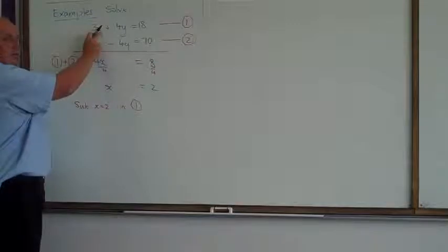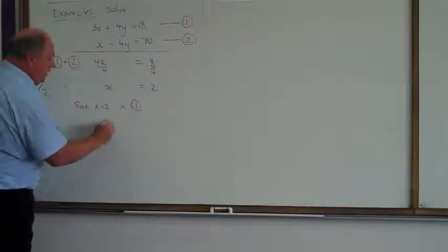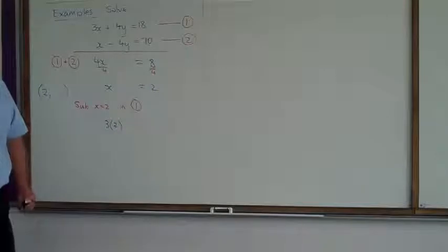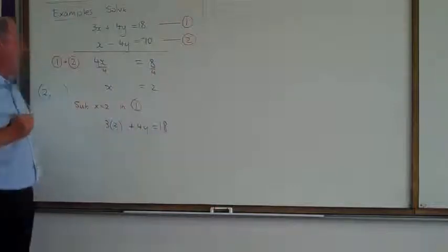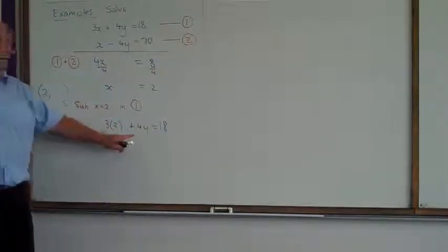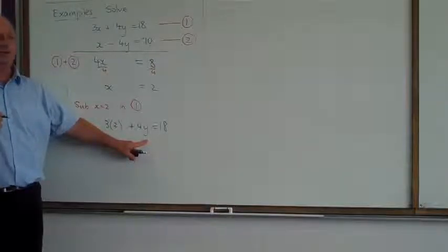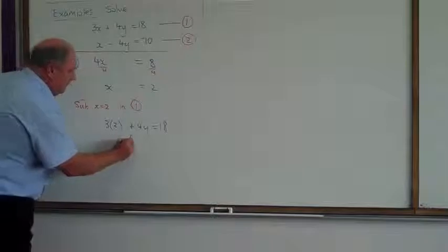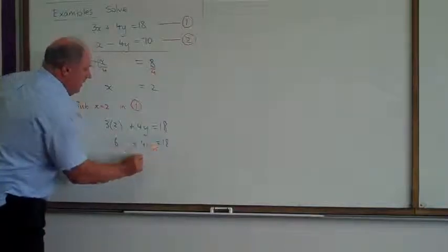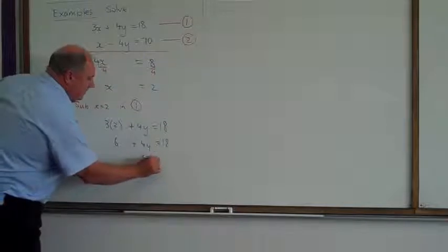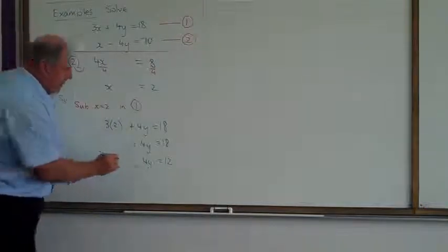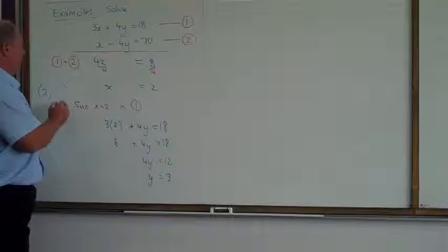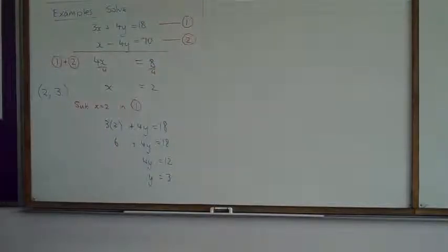I'm going to substitute x equals 2 into equation 1. Which means, everywhere I see x, what am I going to put into place? 2. So, equation 1 says 3x. I'm now going to write 3 times 2. I substitute in brackets when I've got a times in front of the letter. Plus 4y equals 18. By doing that substitution here, then I've only got one letter in the equation. I can solve the y. 3 times 2 is 6. Plus 4y is 18.